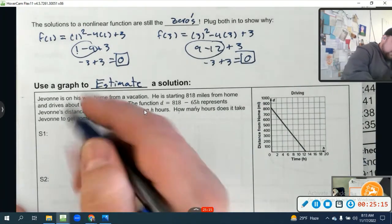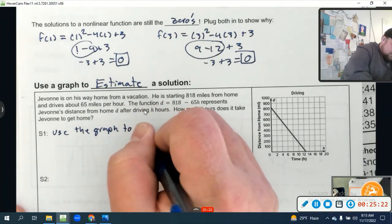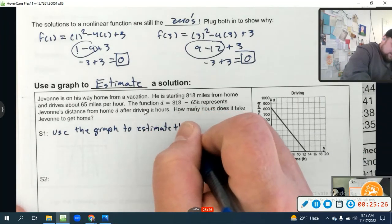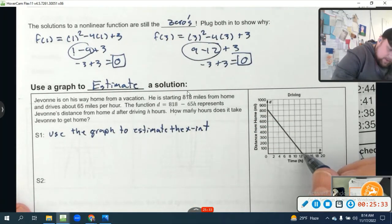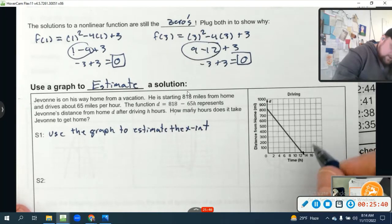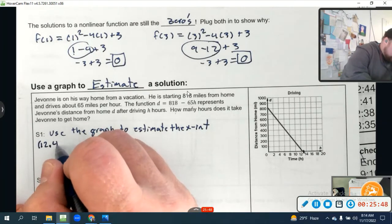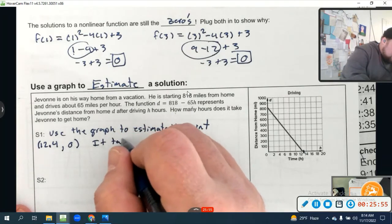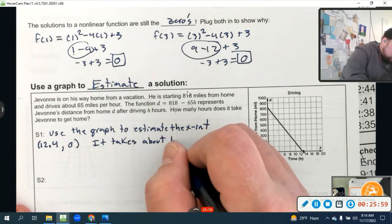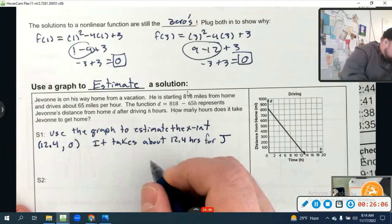How many hours does it take Javon to get home? Step one: we're going to use the graph. He gets home at a distance of zero. It's two in between every tick mark, so if this is 13, that looks to be about 12.4, 12.5. We're estimating, so let's say 12.4, and the y value is zero. What does this tell us? It takes about 12.4 hours for J to get home.